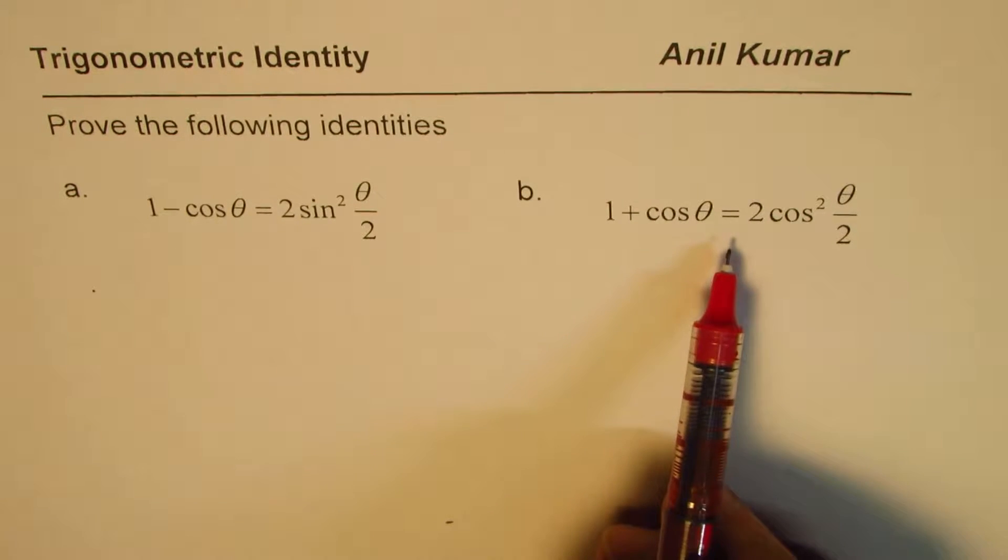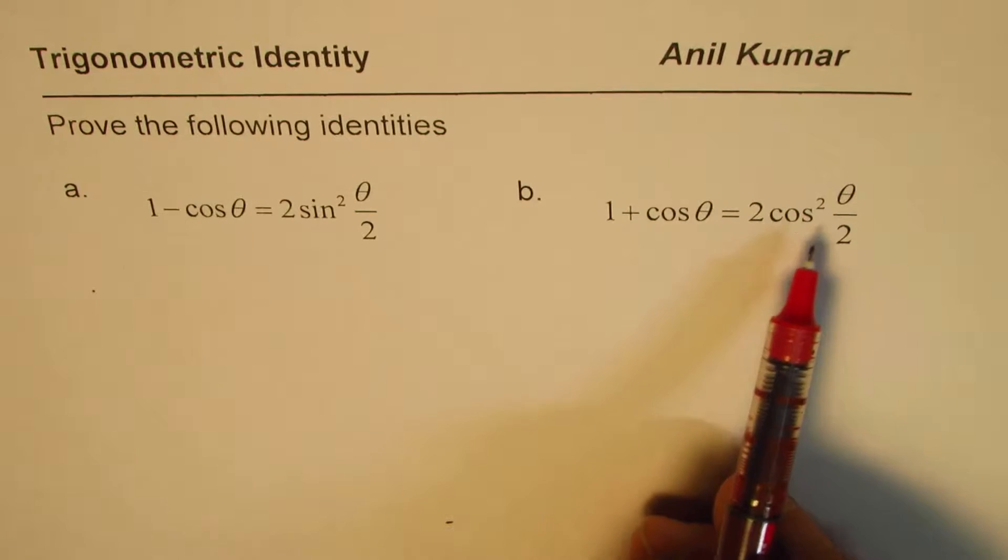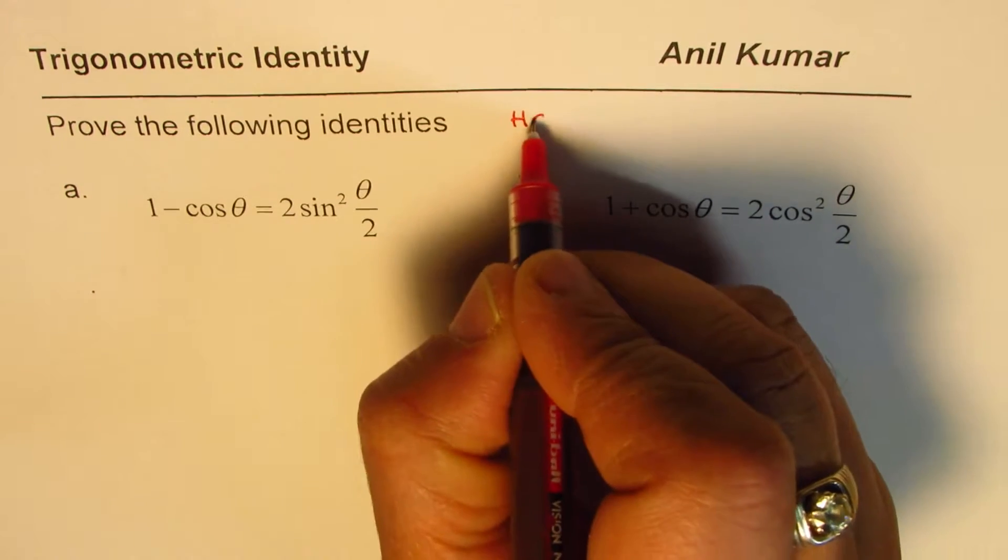Then we have 1 plus cos theta equals to 2 cos square theta by 2. So these are half-angle identities.